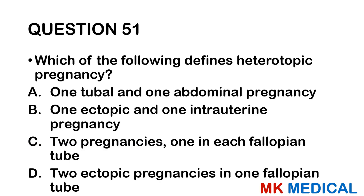Question fifty-one: Which of the following defines heterotopic pregnancy? A, one tubal and one abdominal pregnancy; B, one ectopic and one intrauterine pregnancy; C, two pregnancies, one in each fallopian tube; D, two ectopic pregnancies in one fallopian tube. Heterotopic pregnancy is simply one ectopic pregnancy plus one intrauterine pregnancy.